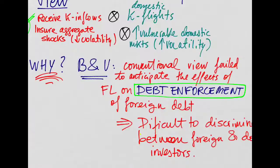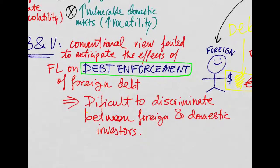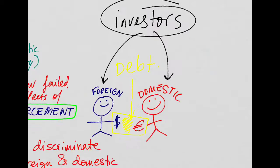So why is this the case? Well, they argue that this conventional view failed to anticipate the effects that opening up would have on debt enforcement, and that some countries would end up wanting to discriminate against foreign investors if the institutional framework is not too solid, producing a very high risk of default.